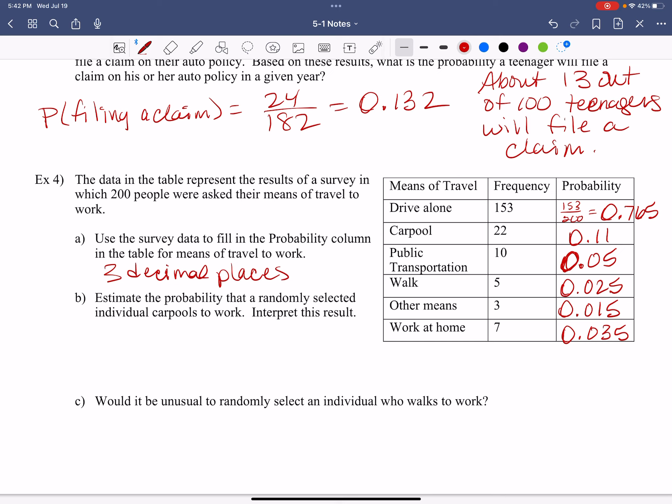Estimate the probability that a randomly selected individual carpools to work. So we've done the work. Let's look here. Carpool. What is that? The probability that a randomly selected individual, because remember, probability says take what we currently know and then make the long-term prediction. So based on this 200 pieces of data, we're going to say, oh, in general, a randomly selected individual carpooled to work. What do we think is going to happen there?